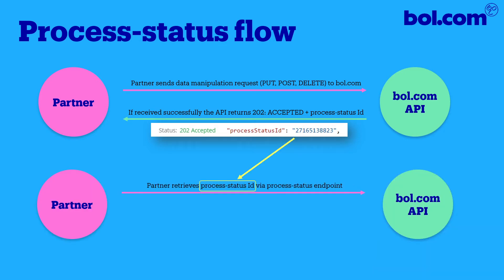You can use the ID you receive to check the status of your requests. Your requests can end up in one of four statuses: either a success, a failure, pending, or a timeout.